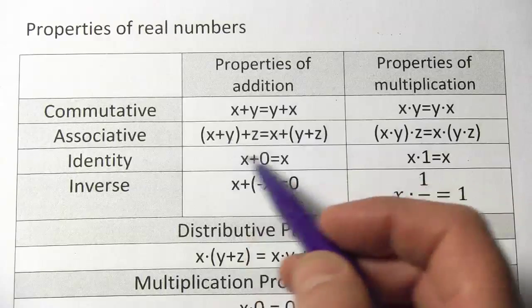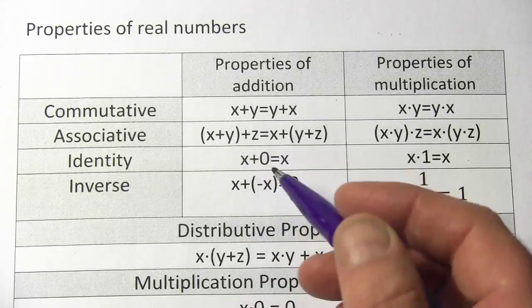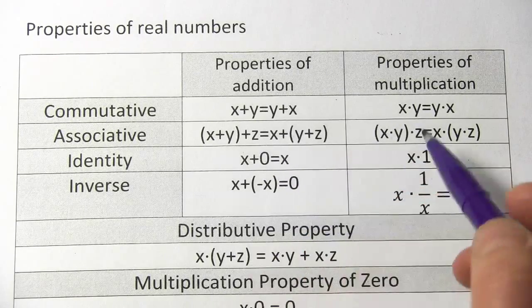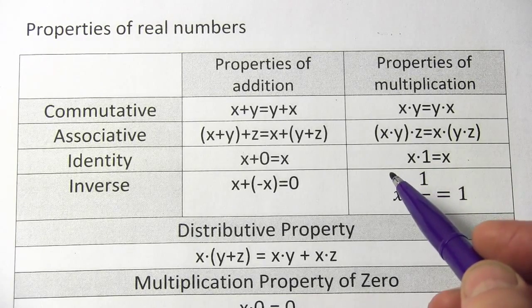The associative property looks at three items and says it doesn't matter if you add the first two and then add the third, or if you add the last two and add the first one to that, it comes out the same. And similarly with multiplication, it really doesn't matter what order you're multiplying things in.